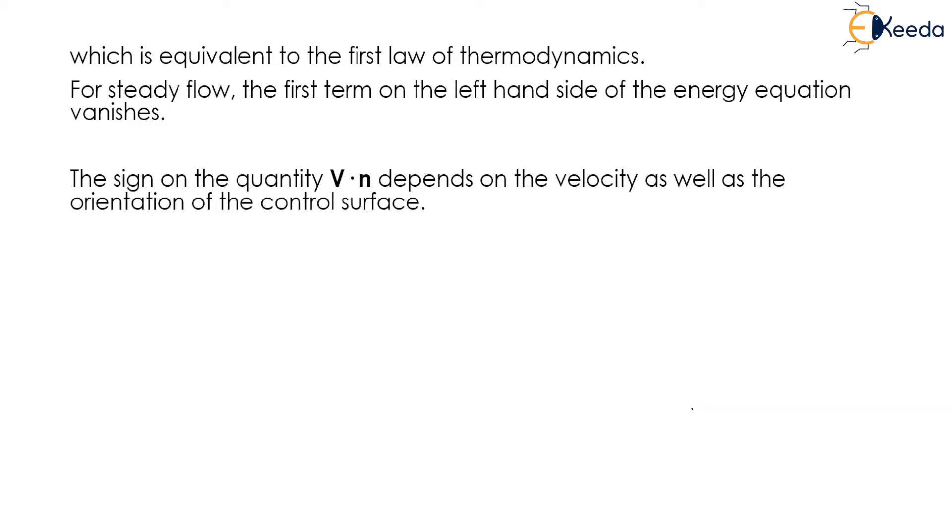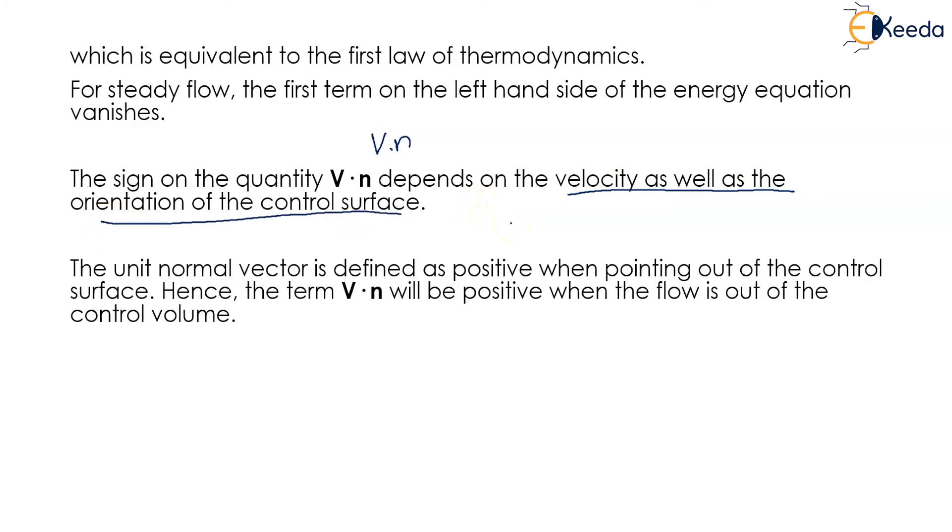The sign on the quantity V·n depends on the velocity as well as the orientation of the control surface. The unit normal vector is defined as positive when pointing out of the control surface. Hence, the term V·n will be positive when the flow is out of the control volume.